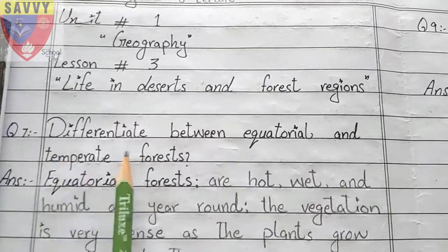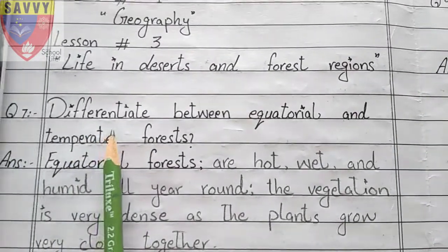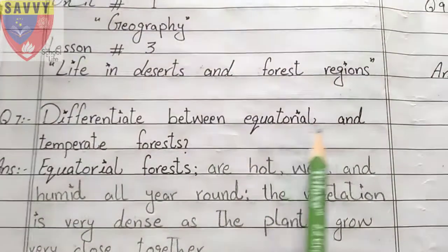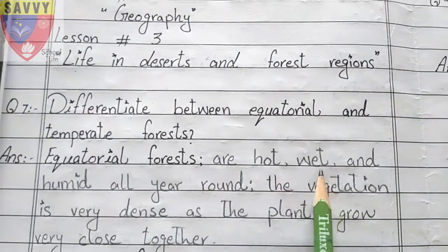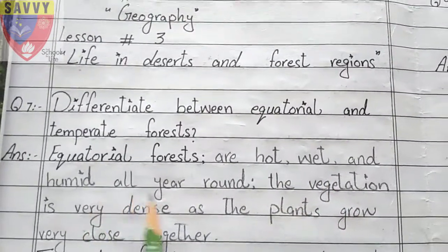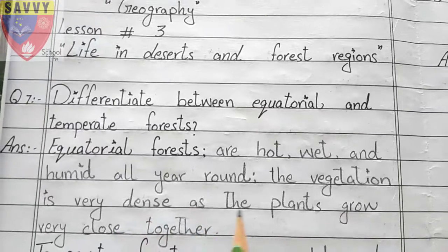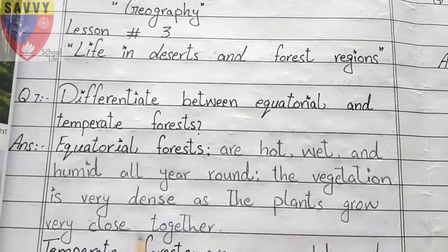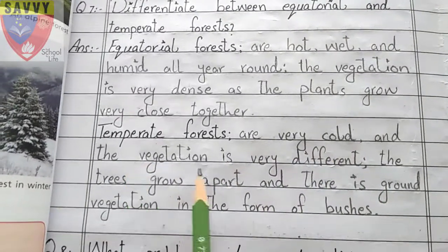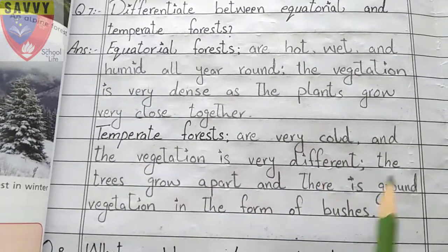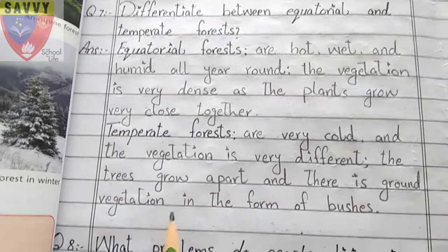Question number 7: Differentiate between equatorial and temperate forests. Equatorial forests are hot, wet, and humid all year round. The vegetation is very dense as the plants grow very close together. Temperate forests are very cold and the vegetation is very different — the trees grow apart and there is ground vegetation in the form of bushes.